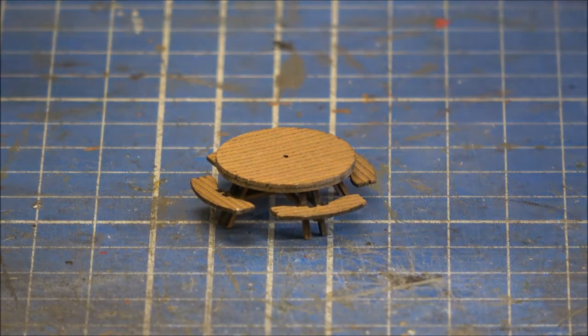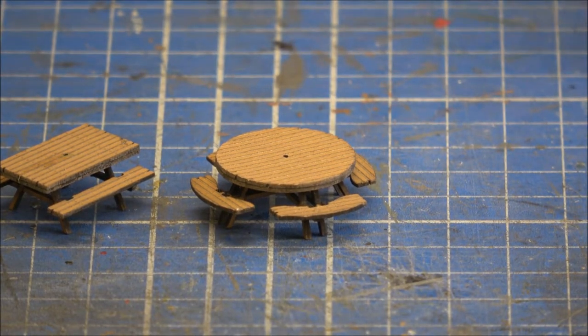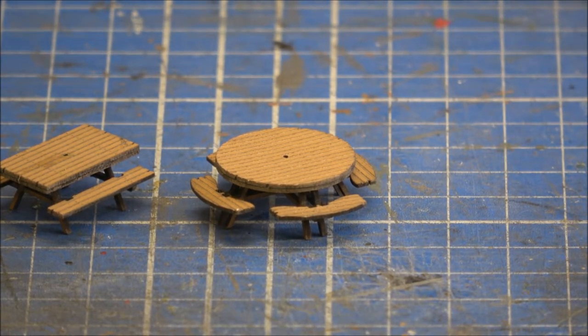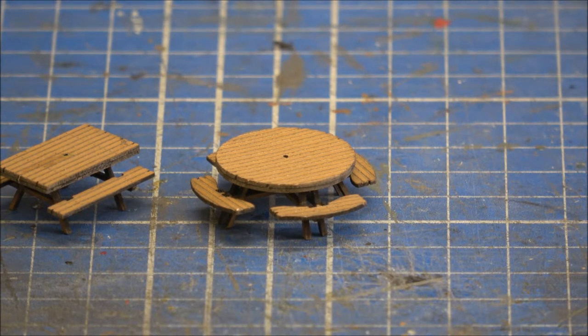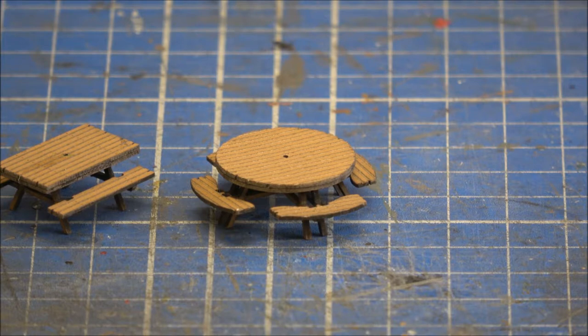So there's two of each type in the kit. And if you want to, you can add the umbrellas. So what I'm going to do is make up the other two benches and then go on to making up the umbrellas.